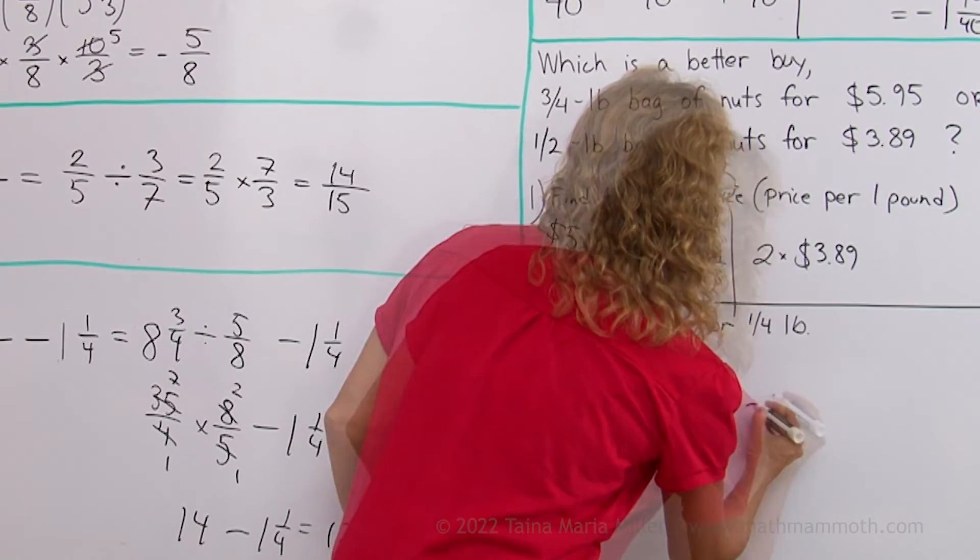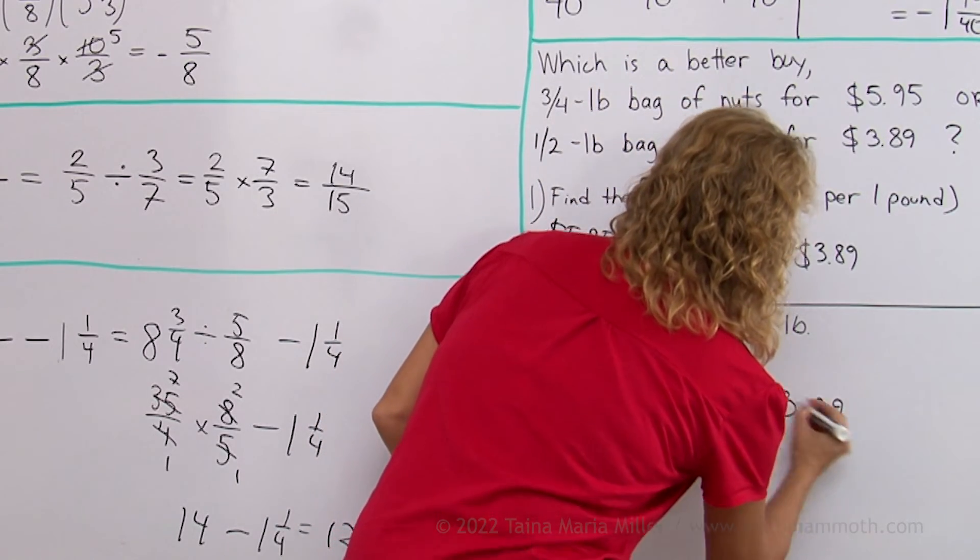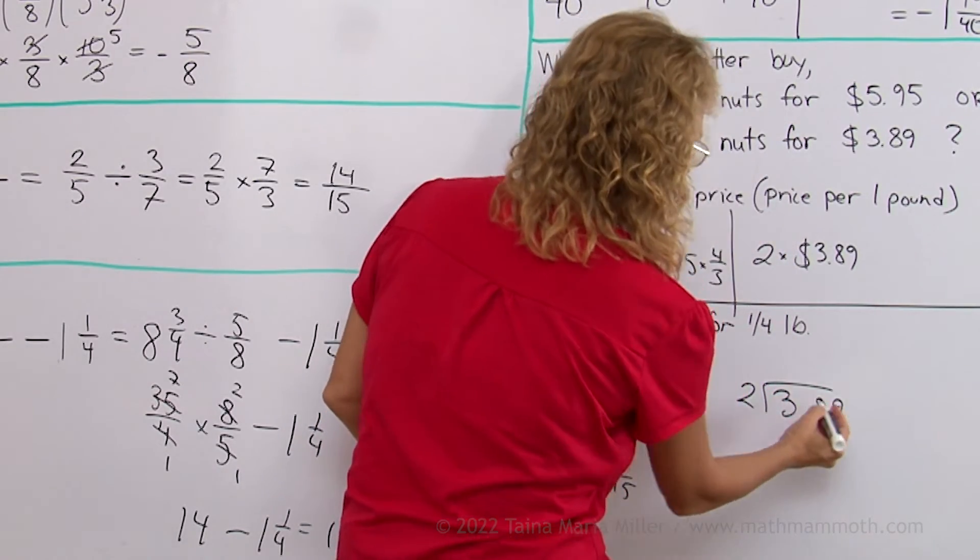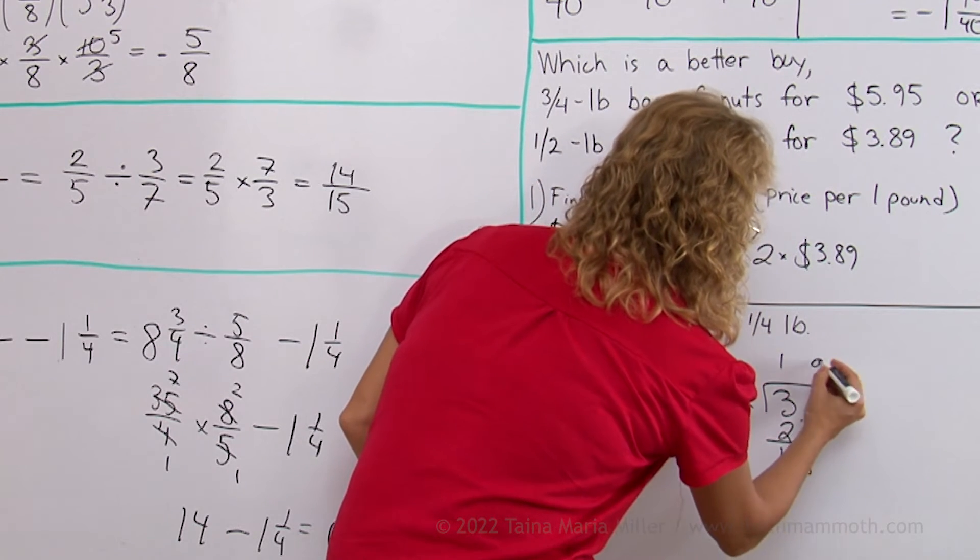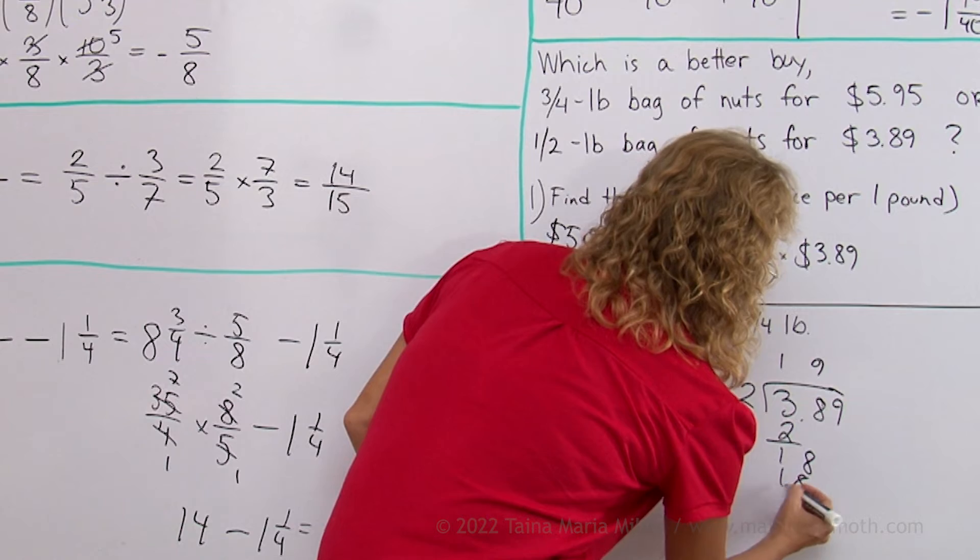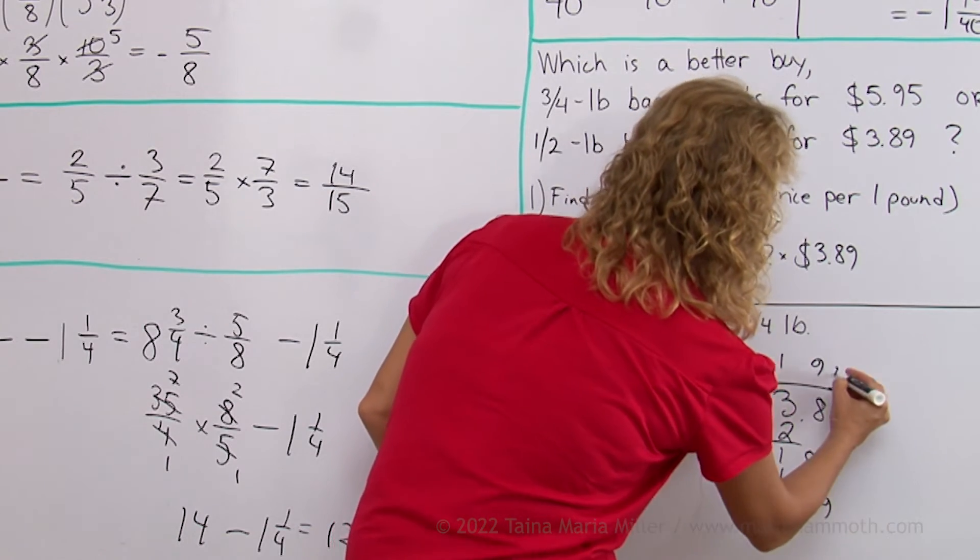And then the other one, 3.89 divided by 2. 2 goes to 3 once. Then we get 18. So 9. And then 9, it goes 4 times.